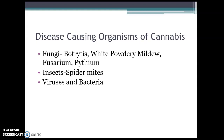Some common diseases caused by organisms — diseases of cannabis — include fungal diseases and insect diseases, and to a lesser extent, viruses and bacteria. For fungi, we're going to look specifically at Botrytis, white powdery mildew, fusarium, and pythium. One insect that's a big pest for cannabis is spider mites. Viruses and bacteria can affect our plants but are a lot less common for cannabis.